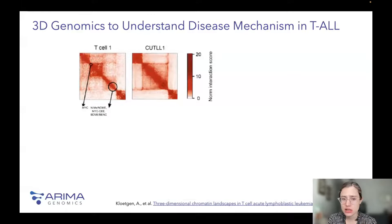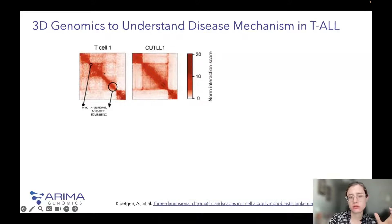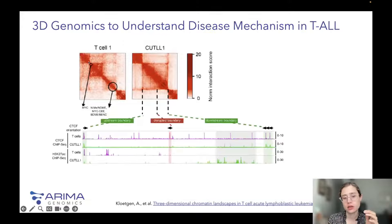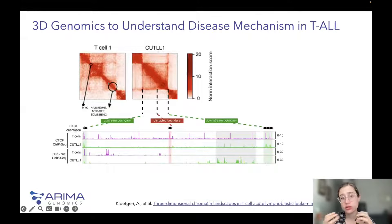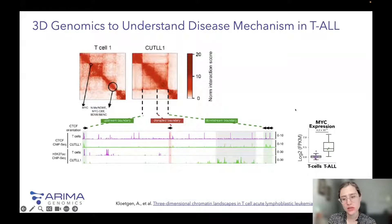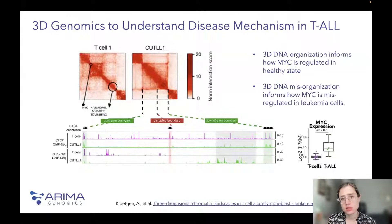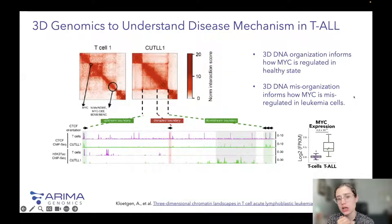In the normal T-cell, the signal between MYC and the super-enhancer is very faint, meaning the enhancer is not activated and not acting on MYC. But when you probe leukemic cell lines with Hi-C, you can see a change in architecture — this area becomes enriched, meaning the enhancer is now activated and acting on MYC. The scientists found a disrupted boundary between these two TAD structures, which is believed to be the driver of MYC overexpression in leukemic cells.